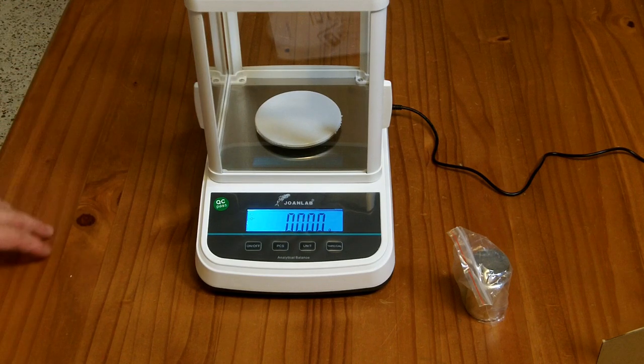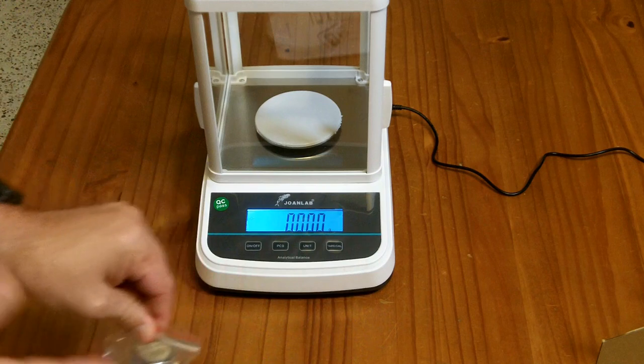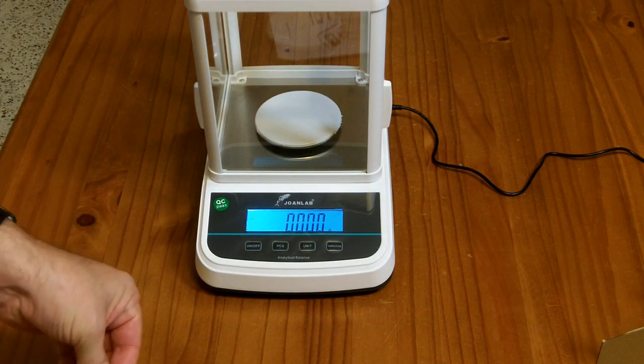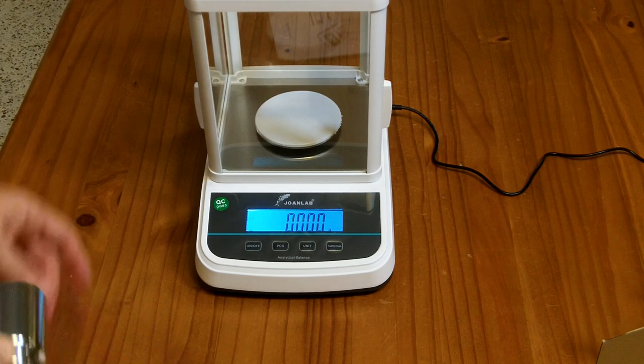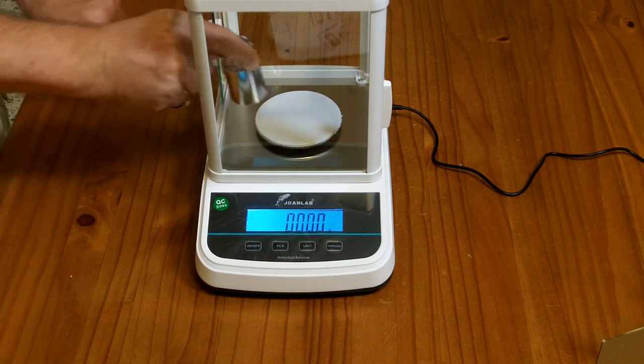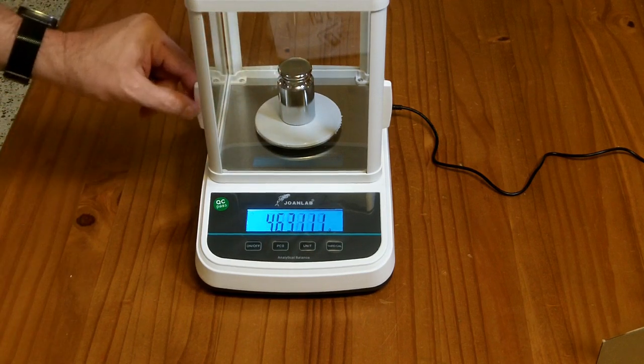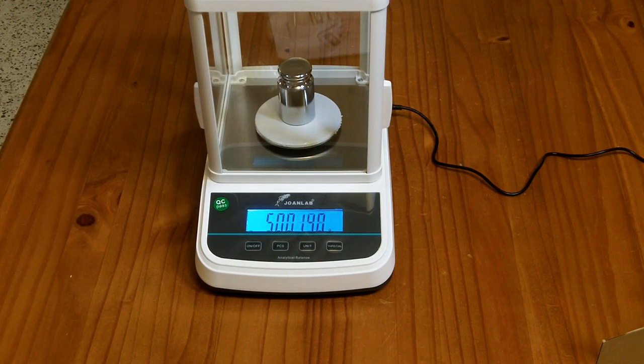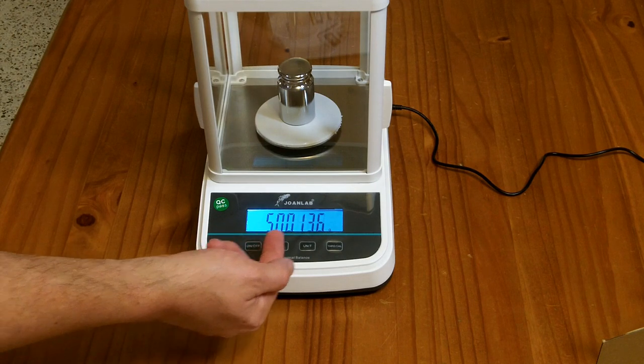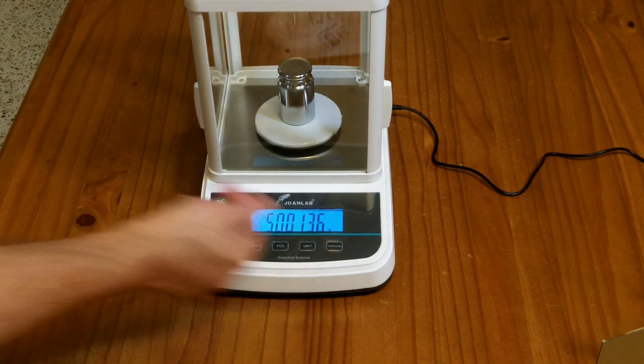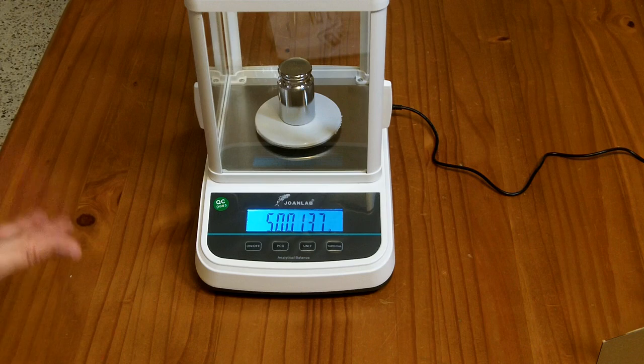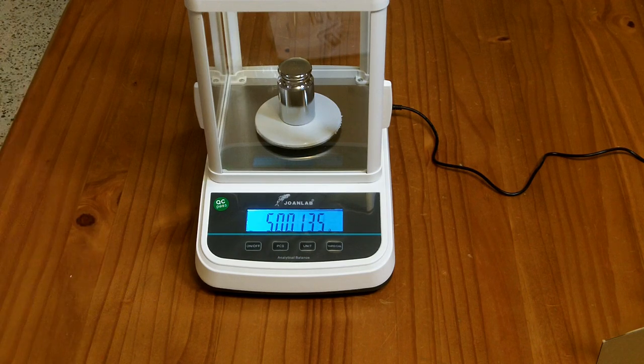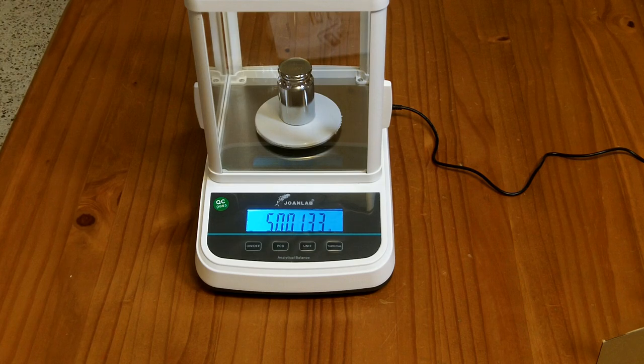So a scale like this with this much accuracy is typically used in chemistry labs or jewelers to measure small amounts of gold for example. Let me go ahead and put this 500 gram weight on that they have thoughtfully provided. So this reads 500.136. So that .136 might be oils from my finger, might be the scale's slightly miscalibrated. So there is a calibration procedure that uses this 500 gram reference weight.